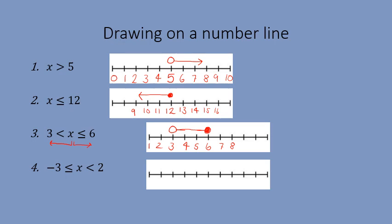The last example: x is greater than or equal to minus 3, but x is less than 2. So I draw a number line from minus 4 up through to a couple above 2. Filled-in dot at minus 3, since it can be equal to minus 3, with the line going upwards. Non-filled-in dot at 2, with the line going downwards. Then I join the two lines together to show the region.